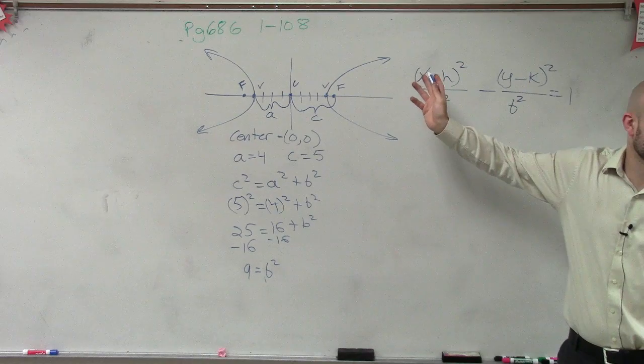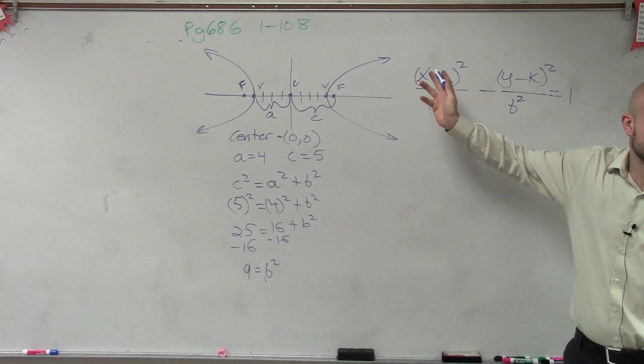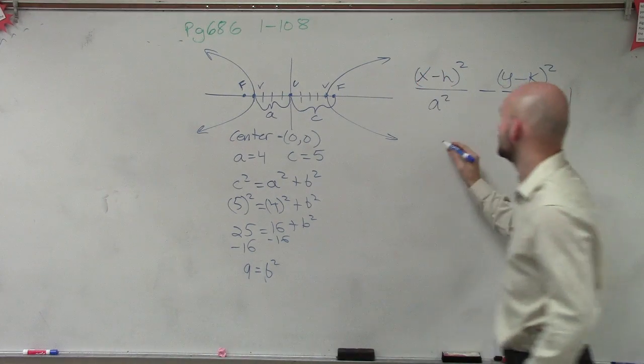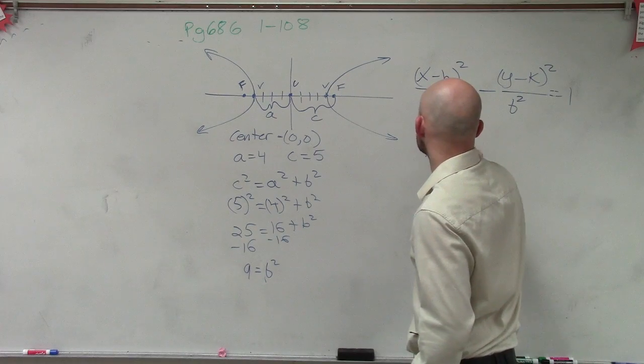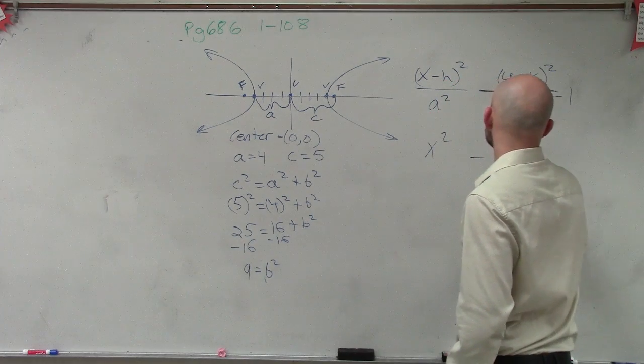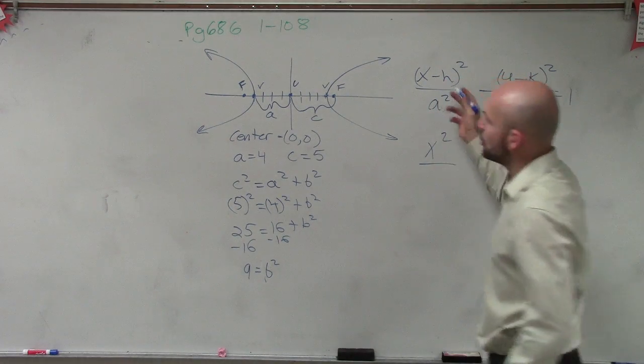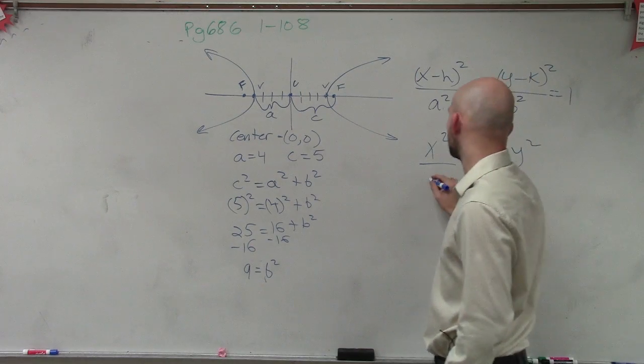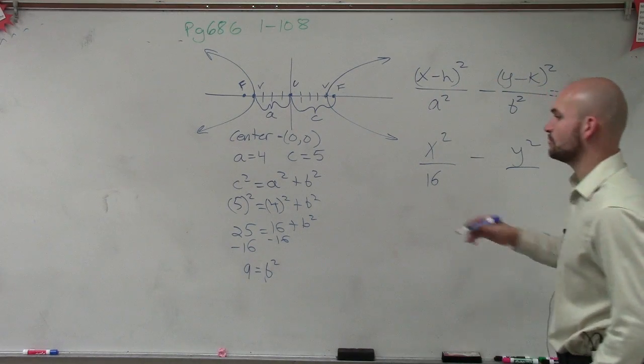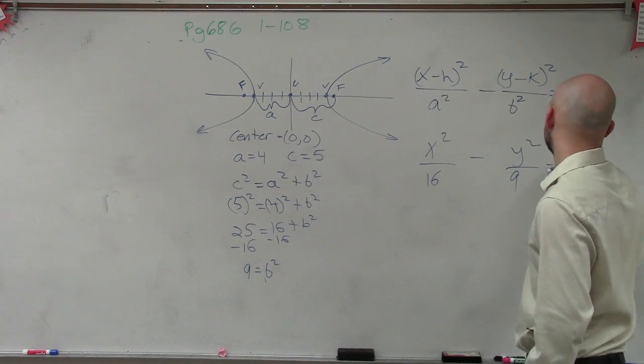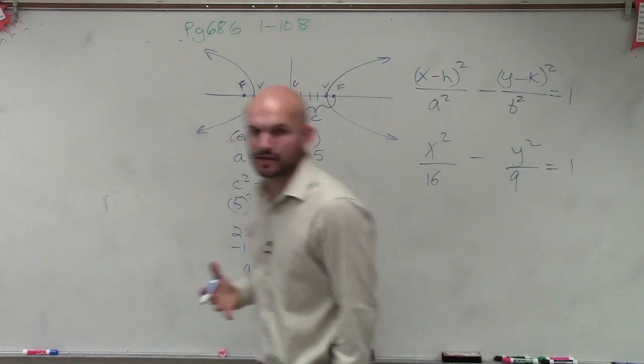We just want to know what b squared is, right, for our formula. Do you guys need me to write 0 for h or k? Or can I just write x squared, y squared? Is that OK? So if I know that this is just going to be x squared minus y squared over a is going to be 4 squared, which is 16, and b squared, which is 9, equals 1. And there's your formula.